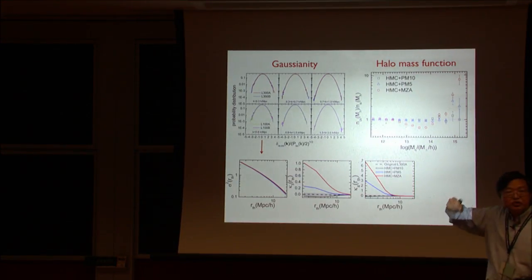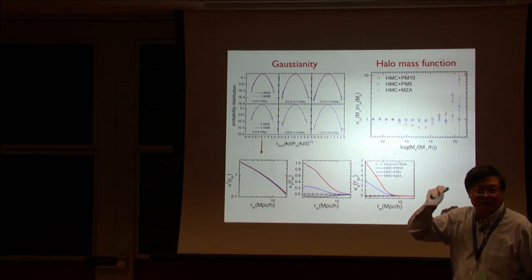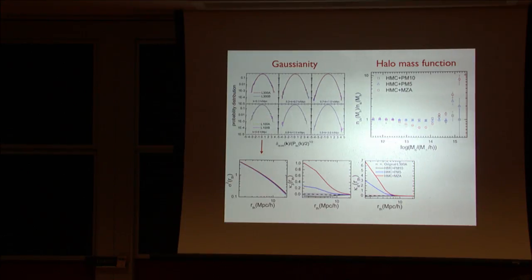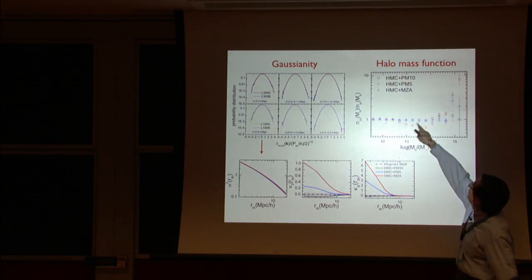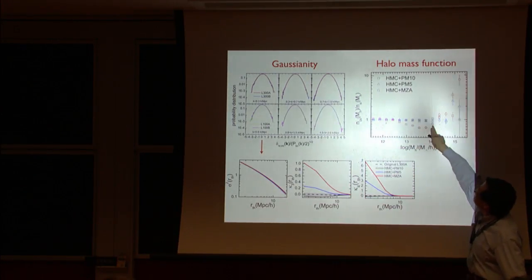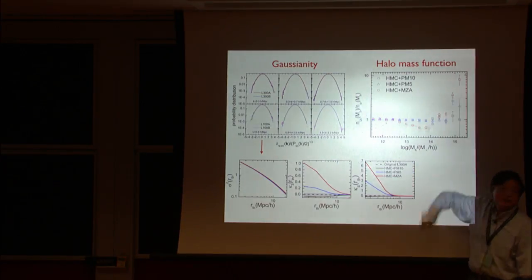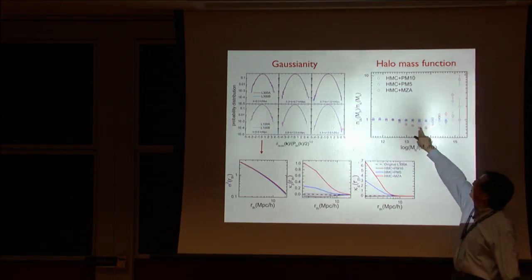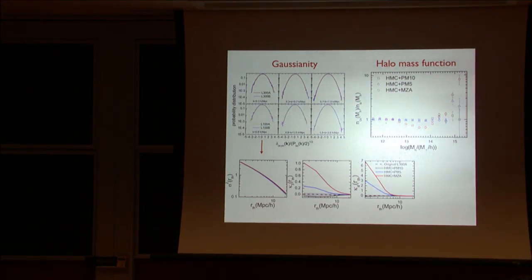The interesting thing is that if you use a not very accurate kind of dynamic model, you introduce a non-Gaussian entity in your reconstructed initial function. And that will affect your halo mass function. You can see this is not that accurate one. That gives you bias in your halo mass function.